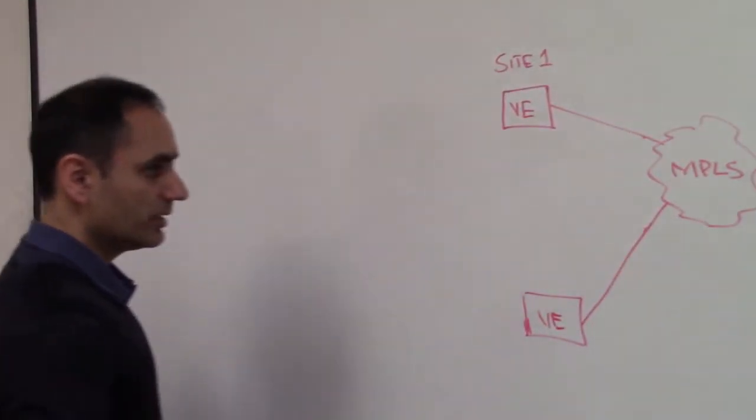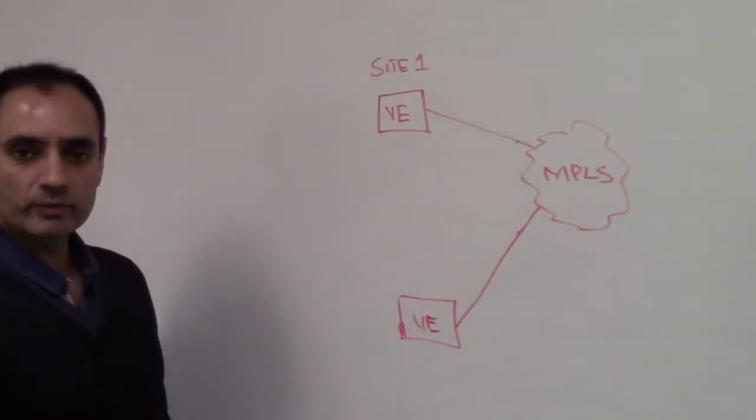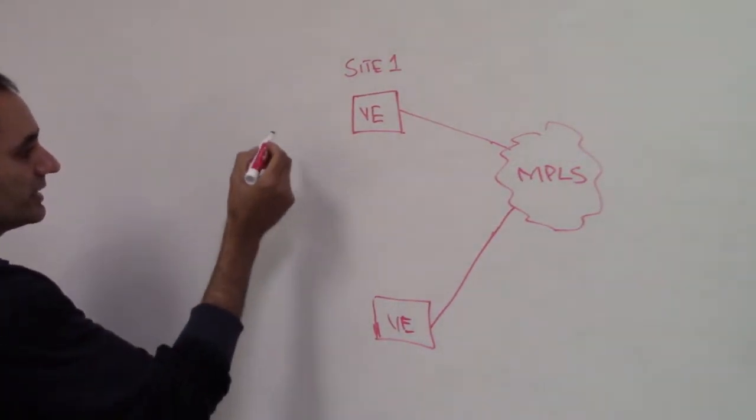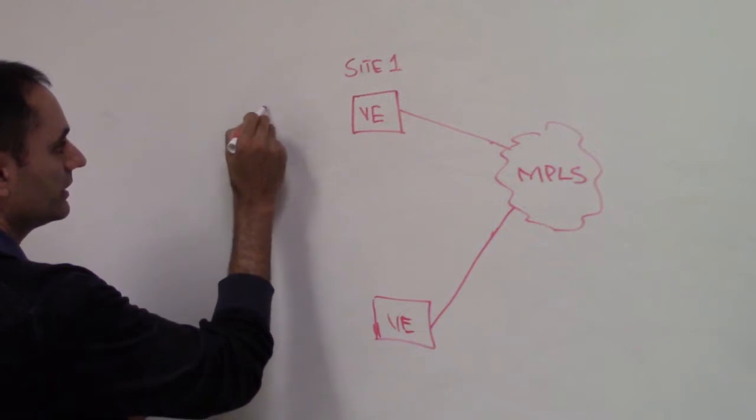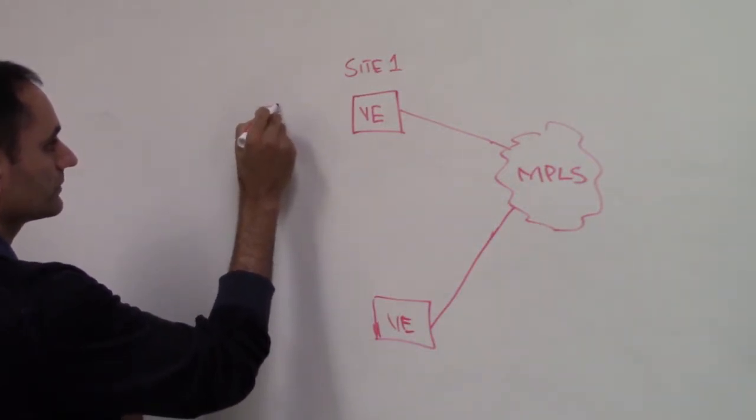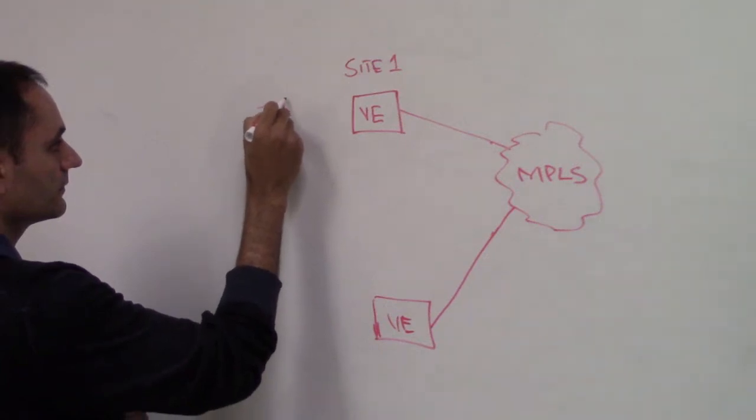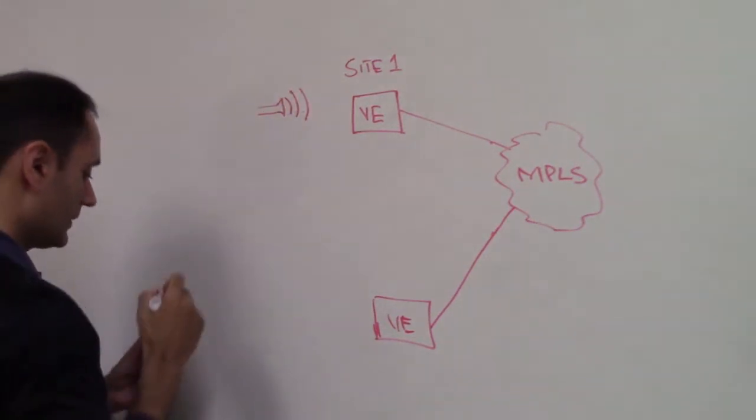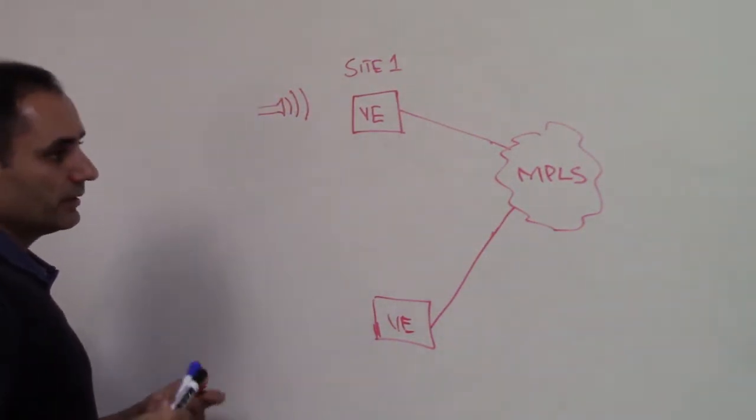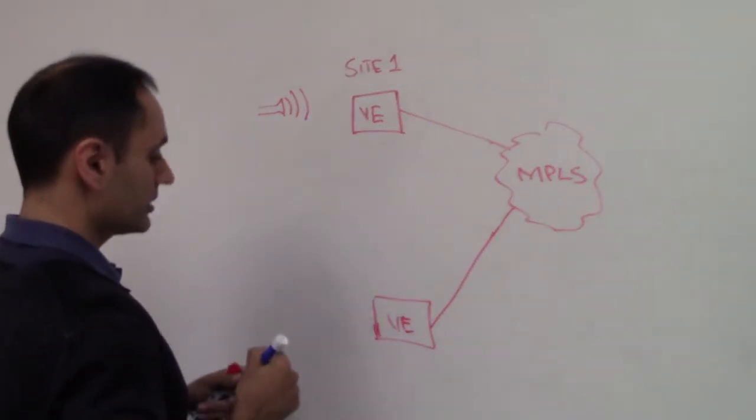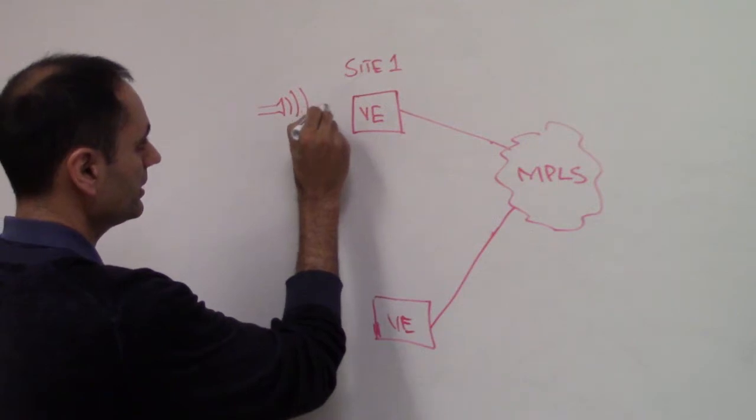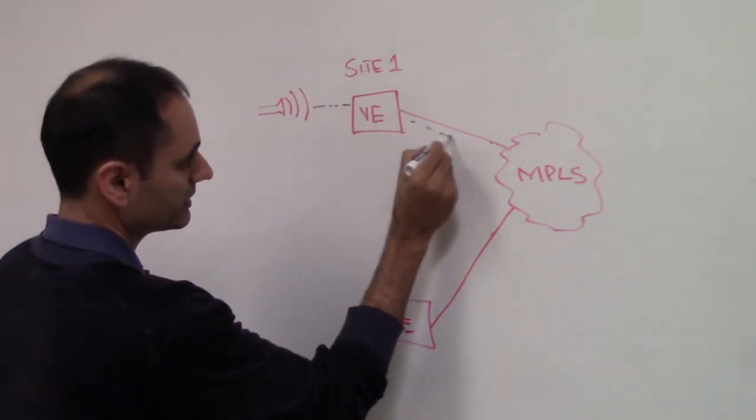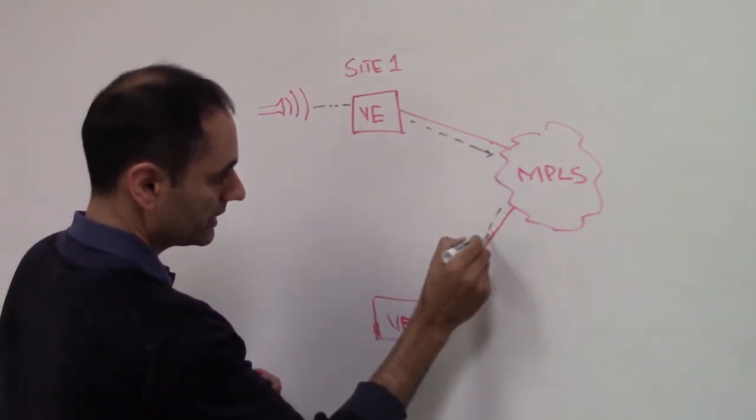Now there's application traffic between these two sites. We'll take an example of a couple of applications. Let's say there's voice traffic between these two sites. And everything is working just fine. You have voice which goes between these two sites. It takes the MPLS transport, gets to the other site.